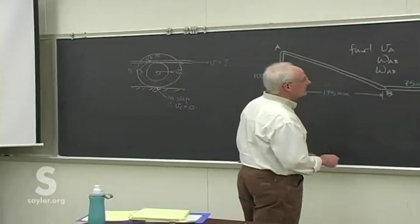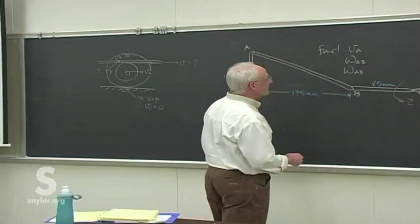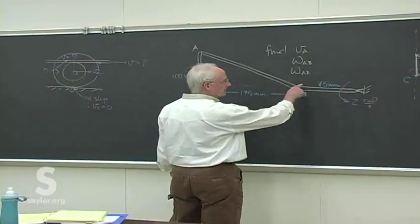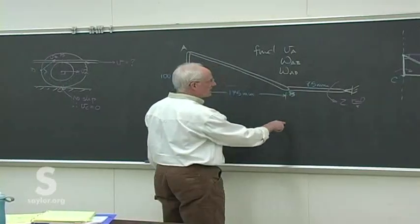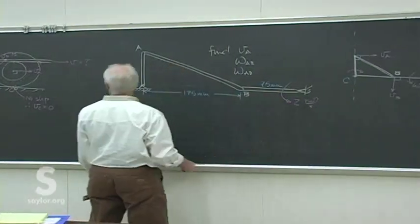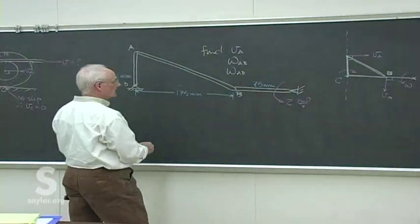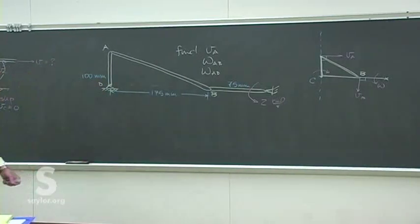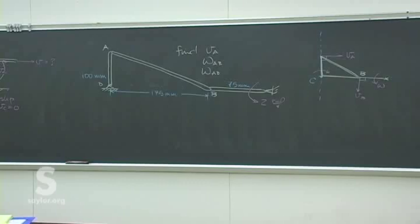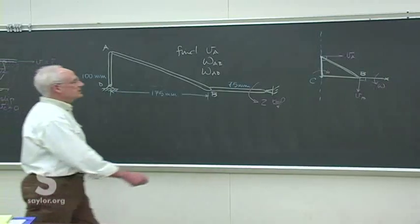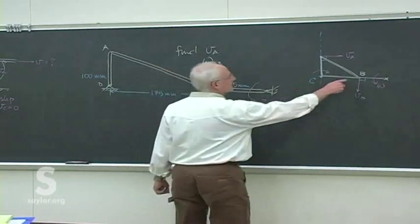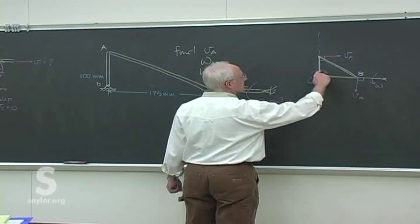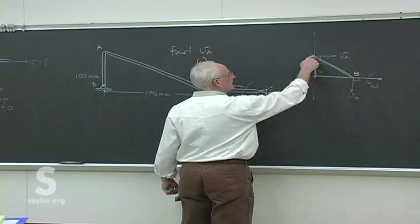Once you've gotten that, using the velocity of B which we can get from the 75 millimeter arm, we can get the velocity of B. Then once you have that, you can get the angular speed, and then you can get the velocity of A.